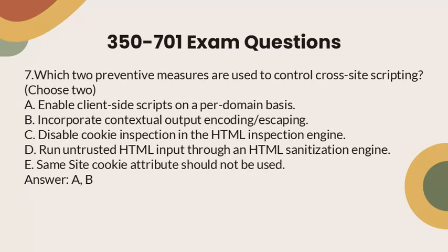Question 7: Which two preventive measures are used to control cross-site scripting? Choose two. a. Enable client-side scripts on a per-domain basis. b. Incorporate contextual output encoding and escaping. c. Disable cookie inspection in the HTML inspection engine. d. Run untrusted HTML input through an HTML sanitization engine. e. Same-site cookie attribute should not be used. Answer: A, B.